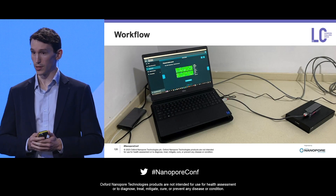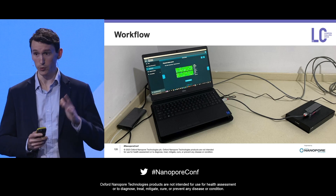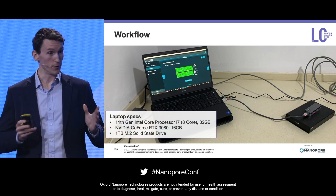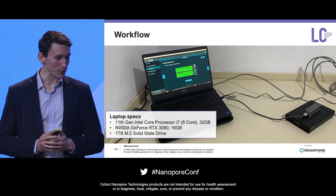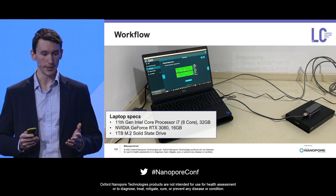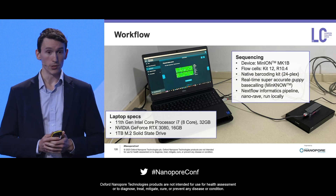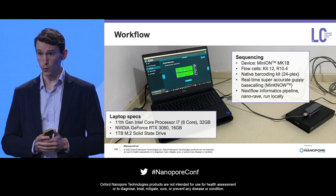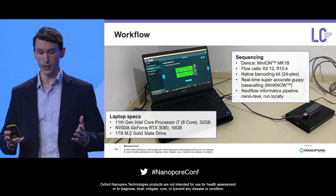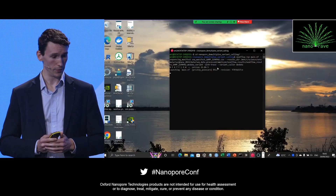So what you see here was the full sequencing, informatics, and analysis workstation, which was able to travel between those two field sites and perform the entire workflow on site. For the geeks in the audience — these were the specs of that laptop: the GPU was an Nvidia RTX 3080, essentially a high-spec gaming laptop. All of the sequencing was done on a MinION using the R10.4 chemistry — we've now started using R10.4.1, which is also working really well — with real-time base calling using Minknow and then the Nextflow pipeline.